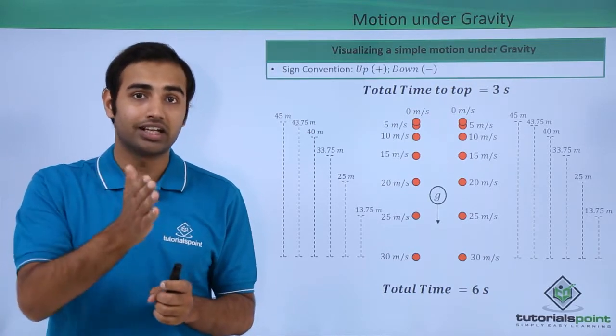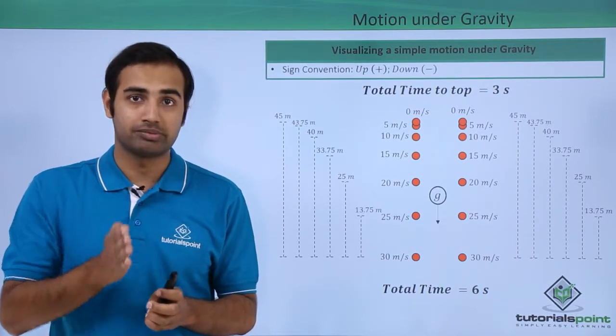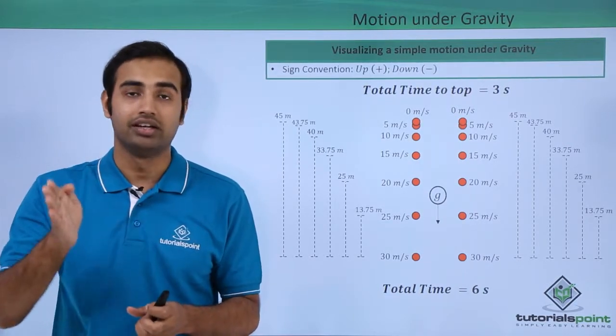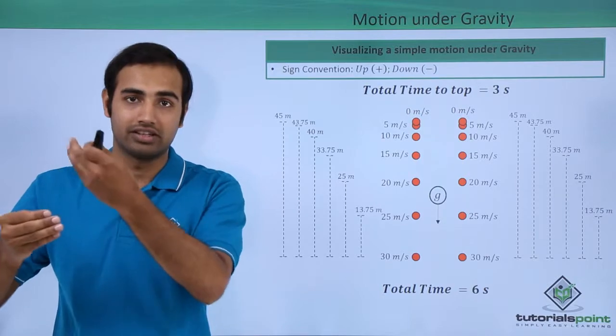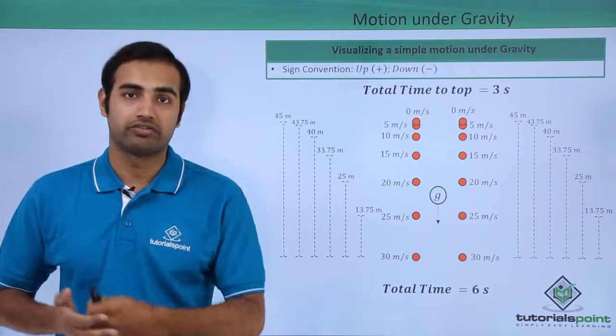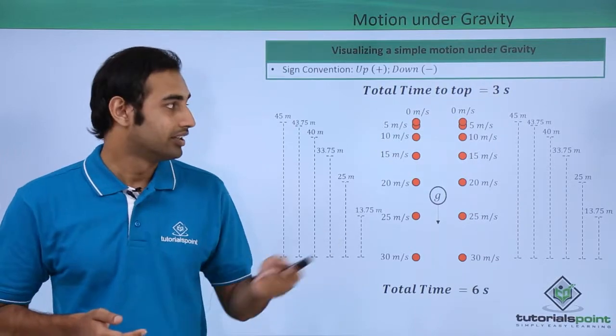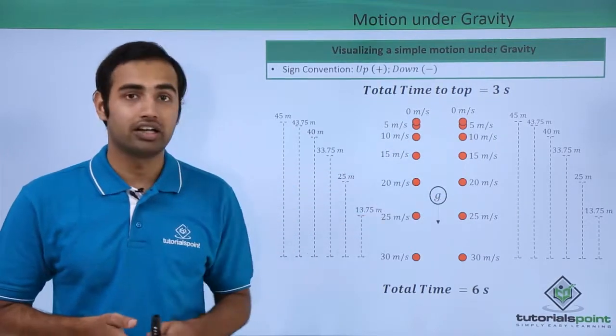This tells me that the second equation of motion is responsible for this behavior, because s is equal to ut plus half at square tells me that as the time varies, the displacement will be a quadratic function of time, or in this case, height will be a quadratic function of time.